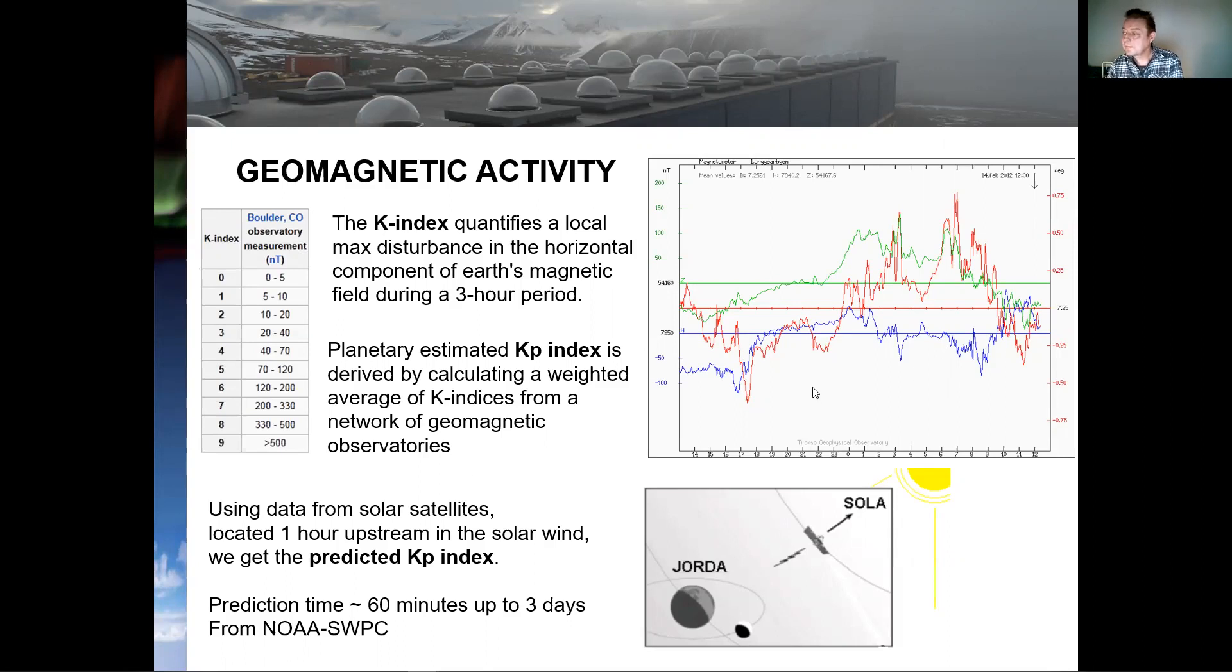Now, if we measure the maximum disturbance of the horizontal component during a three-hour period and subdivide these measurements according to this table over here, we can define the local K index. So zero K means measurements in the region zero to five nanotesla, and everything above 500 nanotesla disturbance of the horizontal field means K index nine.